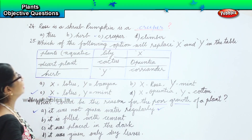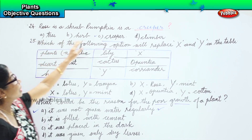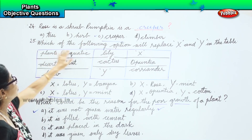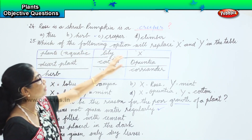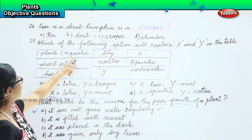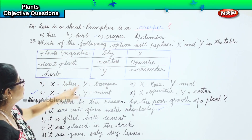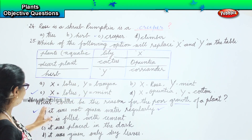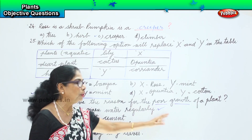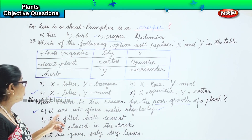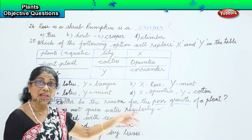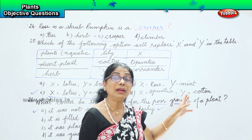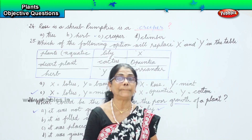Let's look at the three questions and answers. Rose is a shrub; pumpkin is a creeper. For the table, X is aquatic so we have lotus, and Y — mint is a herb — that's the right one. What could be the reason for poor growth? It was not given water regularly. Water needs to be supplied regularly for the proper growth of the plant.